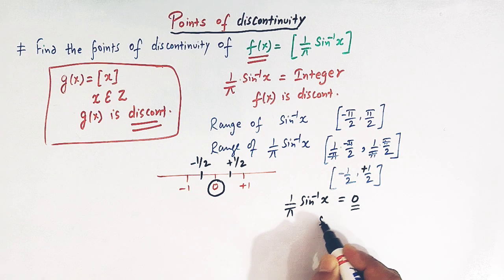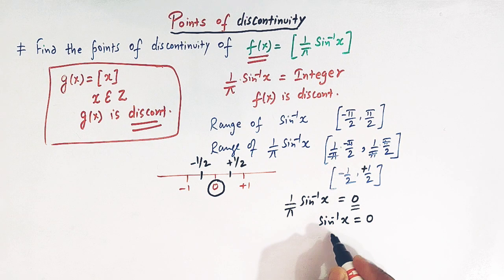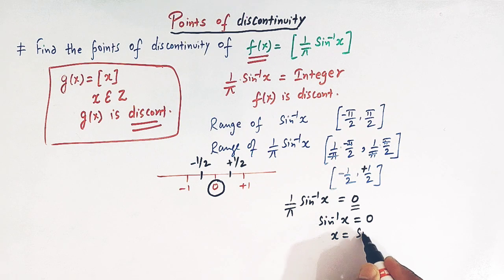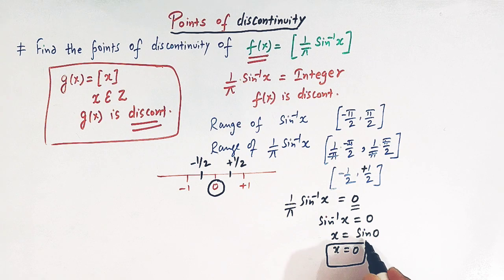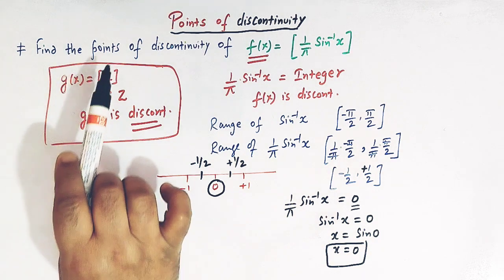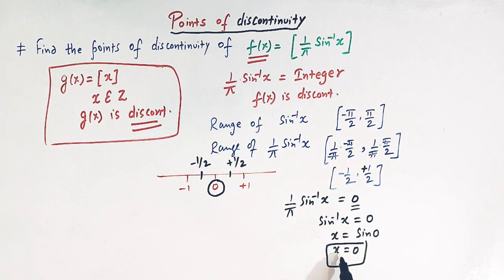Therefore, x = 0 is the only point of discontinuity of this function f(x) = ⌊(1/π)·sin⁻¹x⌋.